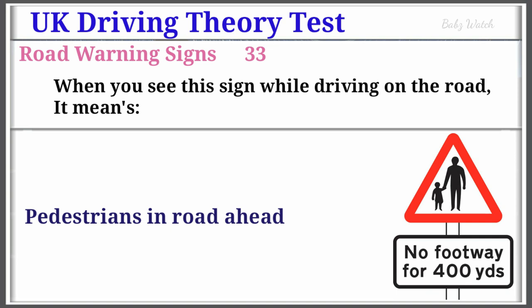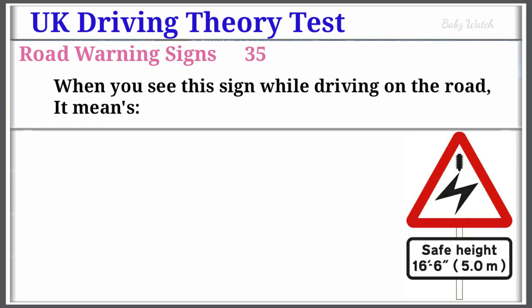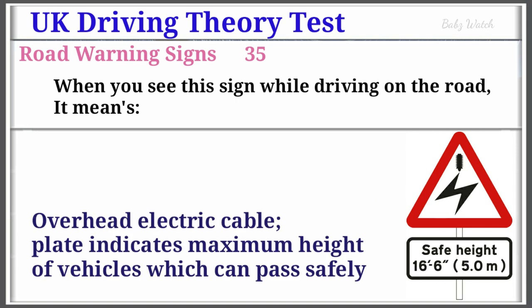UK Driving Theory Test Road Warning Sign Number 34: When you see this sign while driving on the road, it means Zebra Crossing. Warning Sign Number 35: When you see this sign while driving on the road, it means Overhead Electric Cable. Plate indicates maximum height of vehicles which can pass safely.